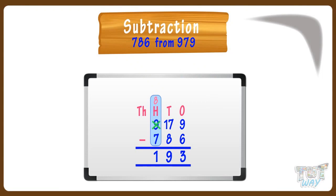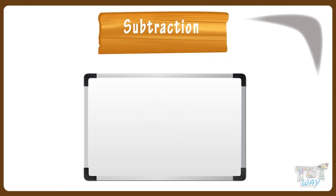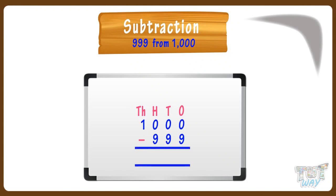Now, let's take just one more example. Can you subtract 999 from 1000? Let's do it. First of all, we will write the numbers in order to subtract them. The first rule is: write the bigger number above the smaller number, and write each numeral below the mark of its place value. Remember to start from ones place.